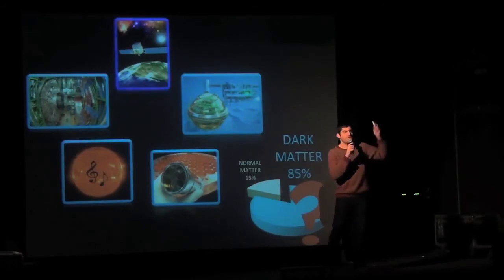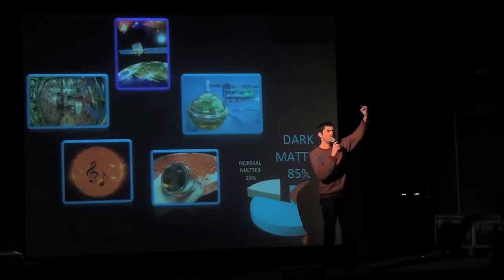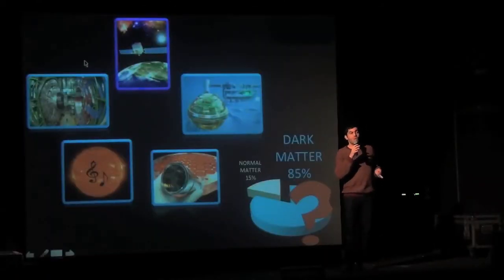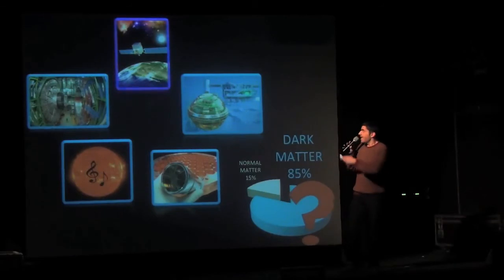Other strategies. So dark matter accumulates in the universe in more dense regions. And in these regions, it may destroy itself, annihilate, and then produce new things, produce new particles which we can measure. Dark matter can produce neutrinos, can produce gamma rays. So there are telescopes, satellites out there, looking for these things.